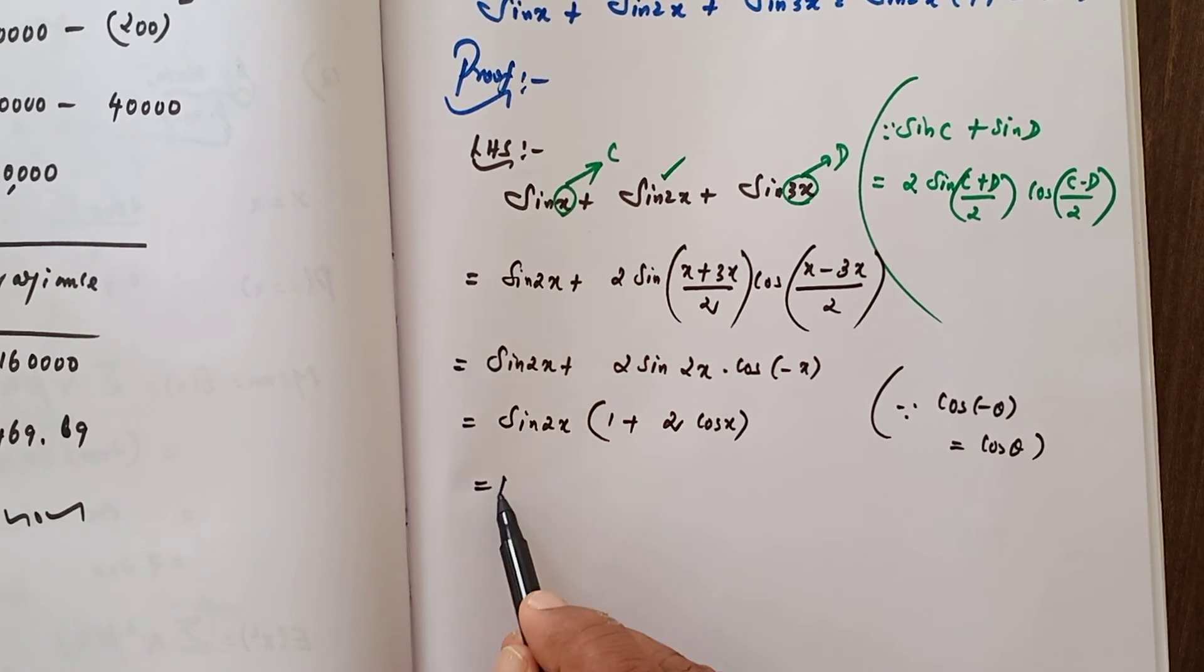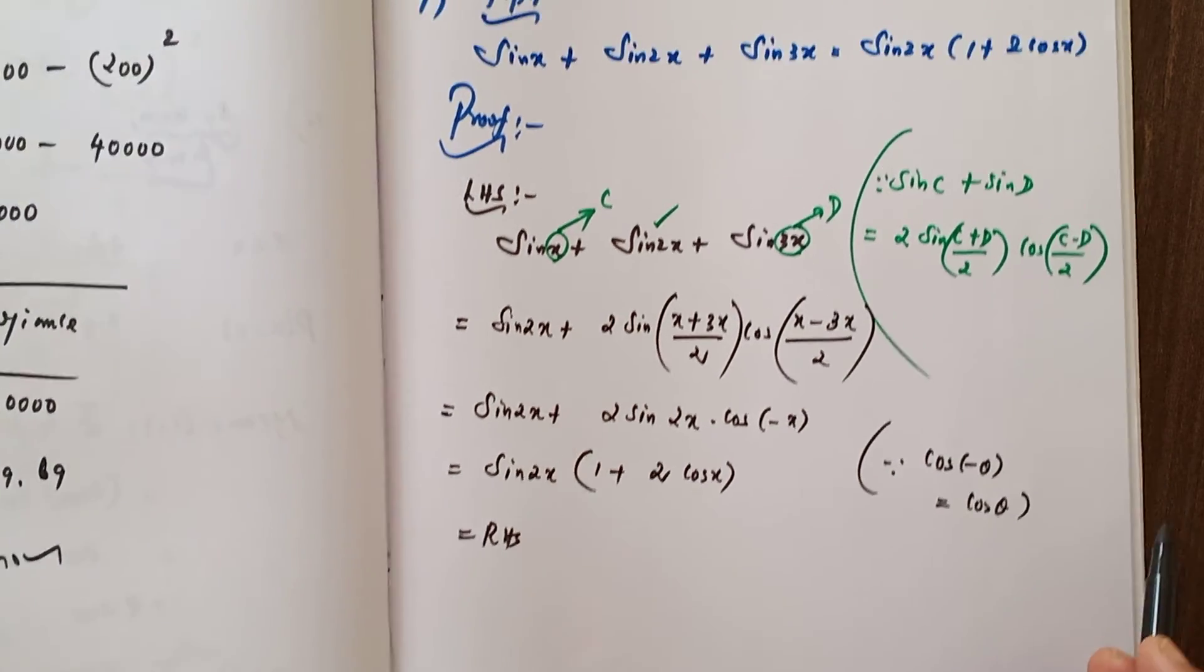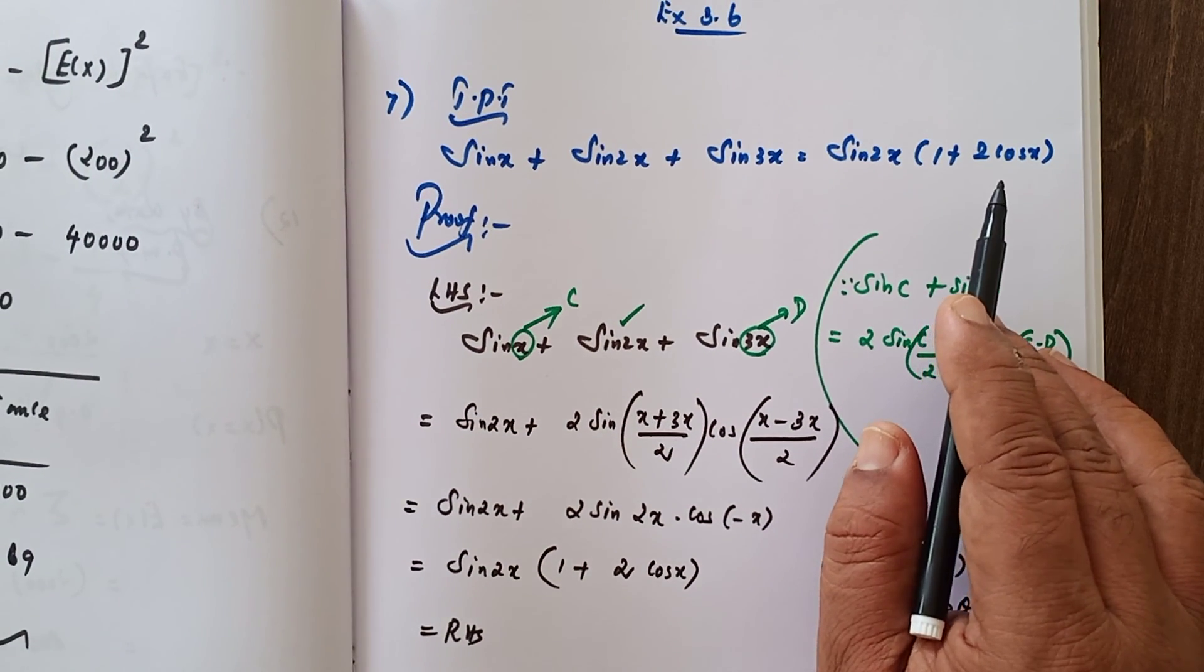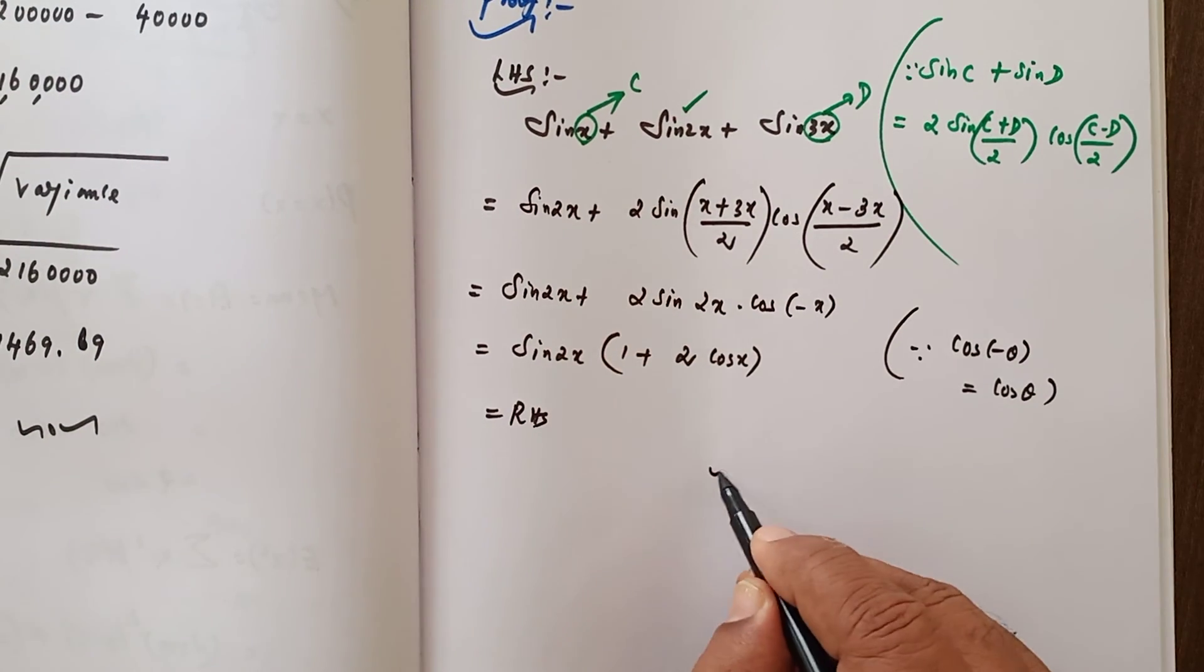Look at that. That is sin 2x into 1 plus 2 cos x. Here it is. So we have proved. Problem number 7 is completed.